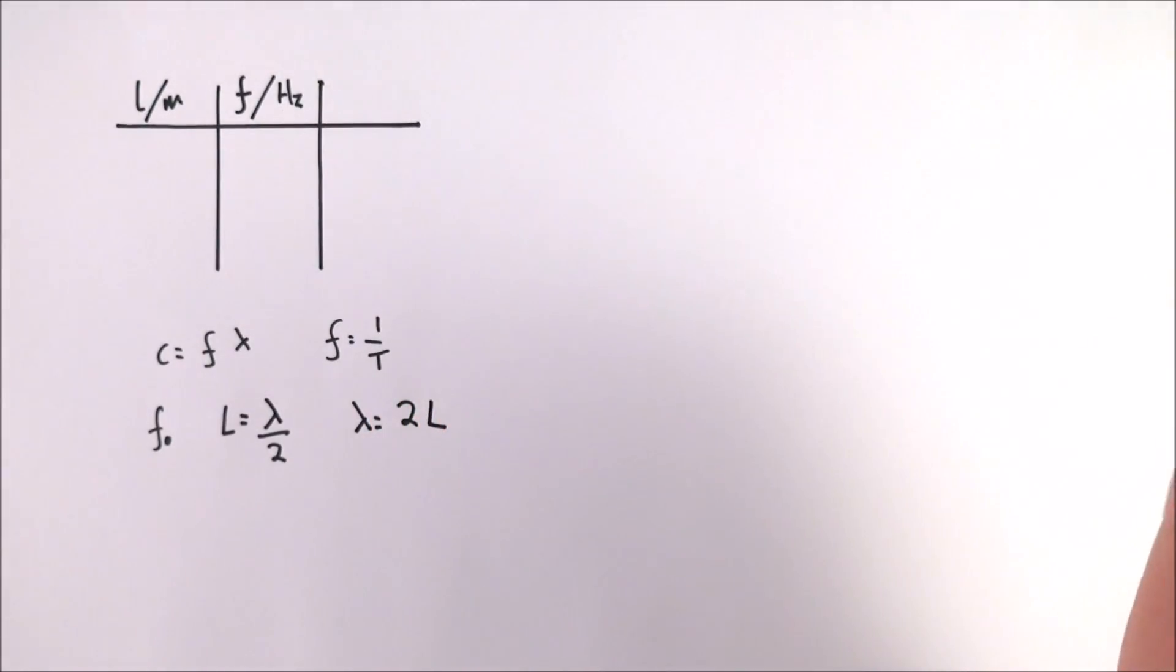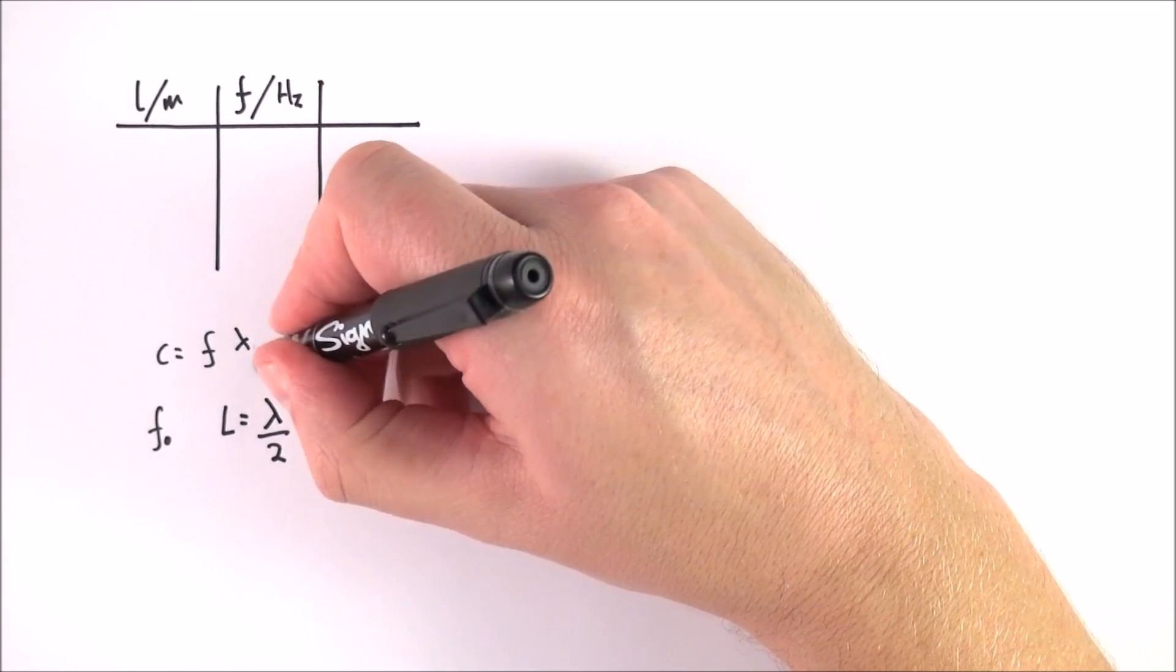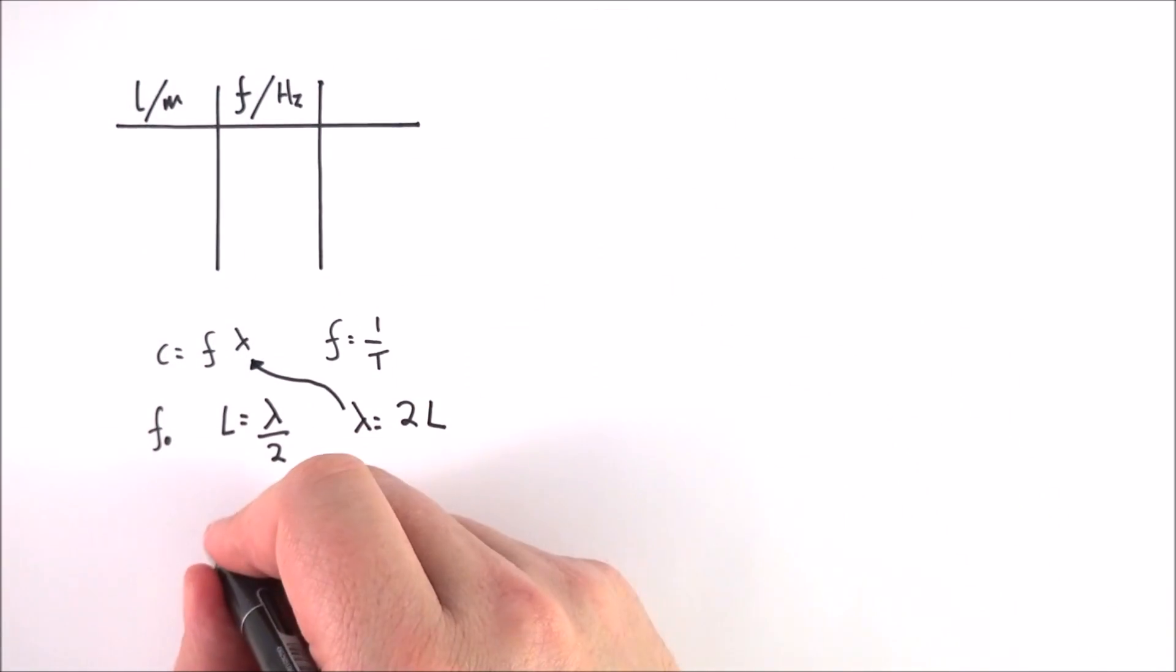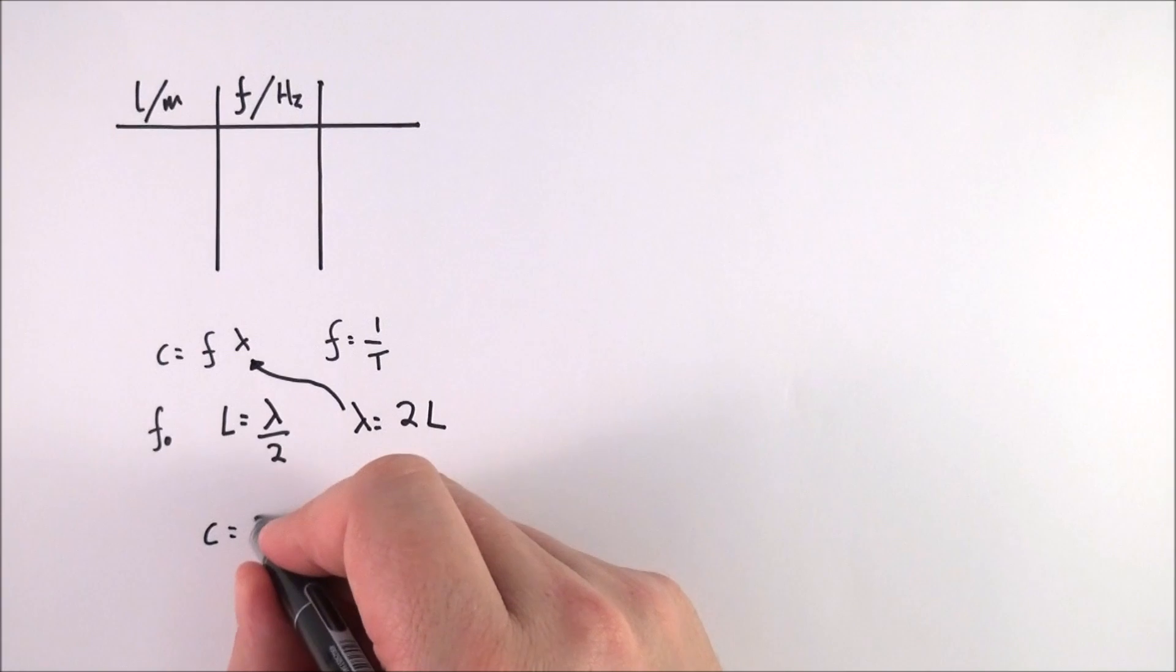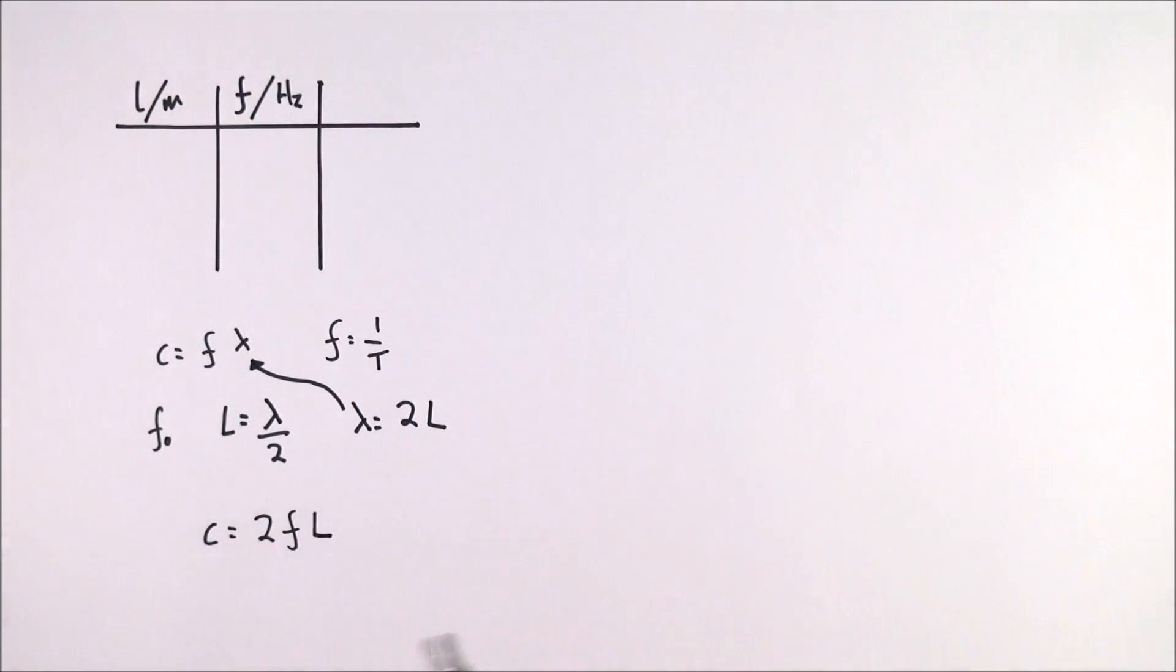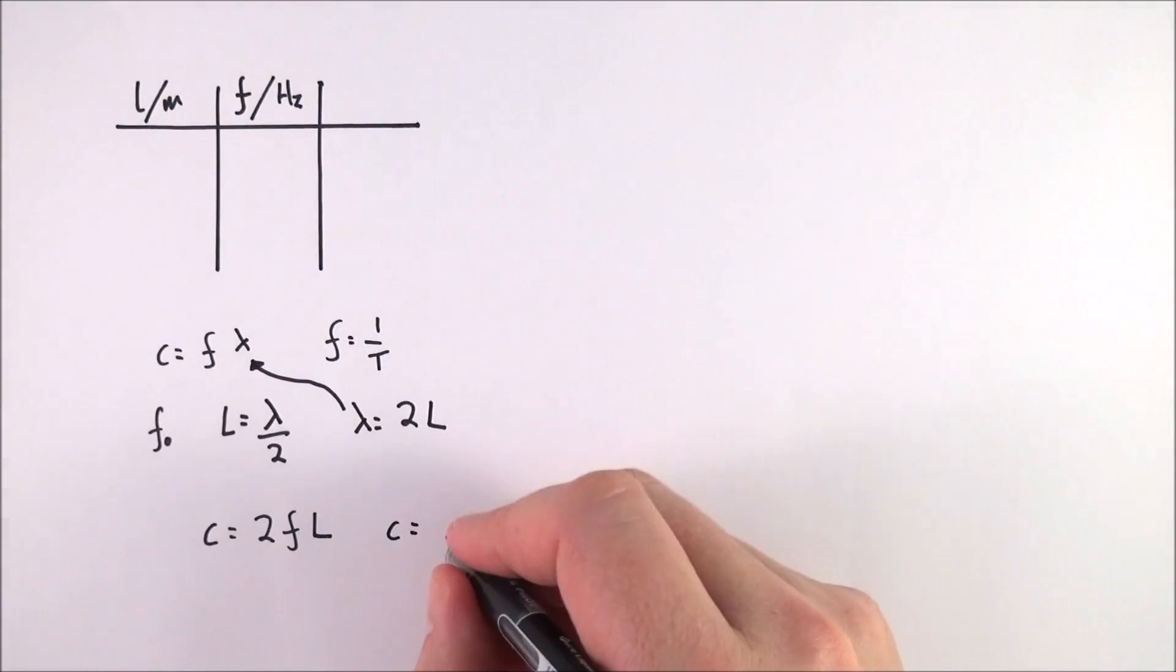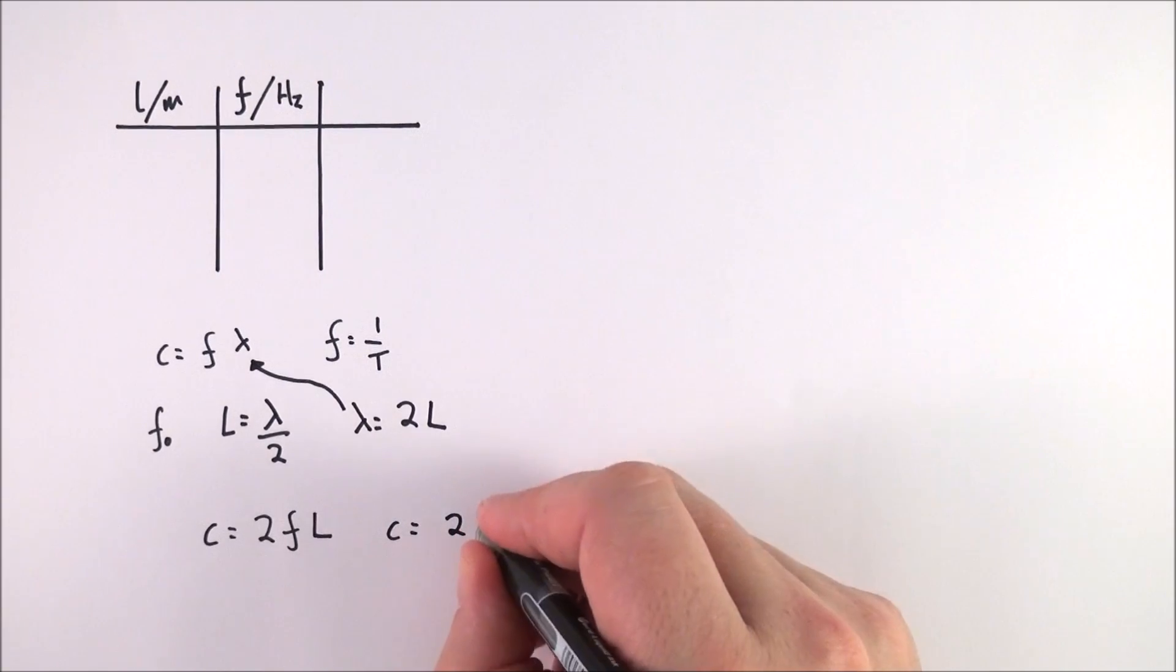If I take this value of lambda and substitute it back into that equation, we can say that the wave speed is equal to two times f times L. If we know that f is equal to one over T, we can also say that the wave speed is equal to two L over T.